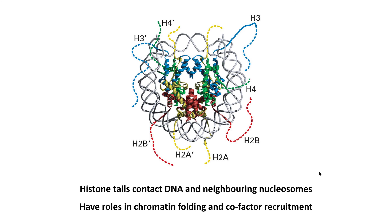A key feature are these histone tails, which are not present in the X-ray crystal structure because they are unstructured. These tails are really quite long — they'll extend beyond the edge of the nucleosome and can easily contact neighboring nucleosomes. The histone tails are highly positively charged and can bind to nucleosomal DNA and linker DNA, and also to negatively charged acidic patches on neighboring nucleosomes. So histone tails have key roles in chromatin folding and in cofactor recruitment.